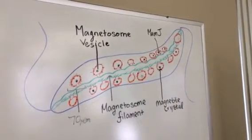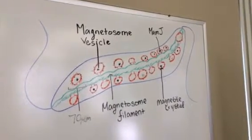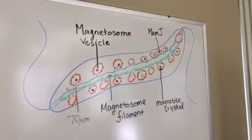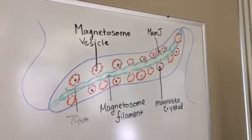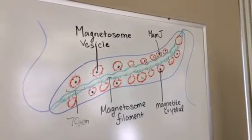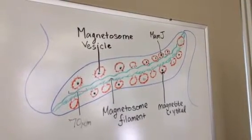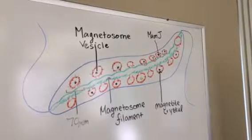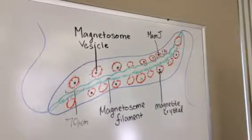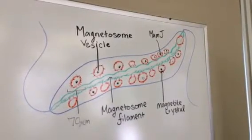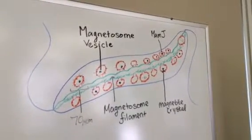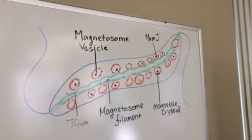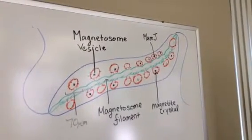Each magnetite crystal within a magnetosome is surrounded by a lipid bilayer. Specific soluble and transmembrane proteins are sorted to the membrane. More recent studies have shown that magnetosomes are invaginations of the inner membrane and not freestanding vesicles.